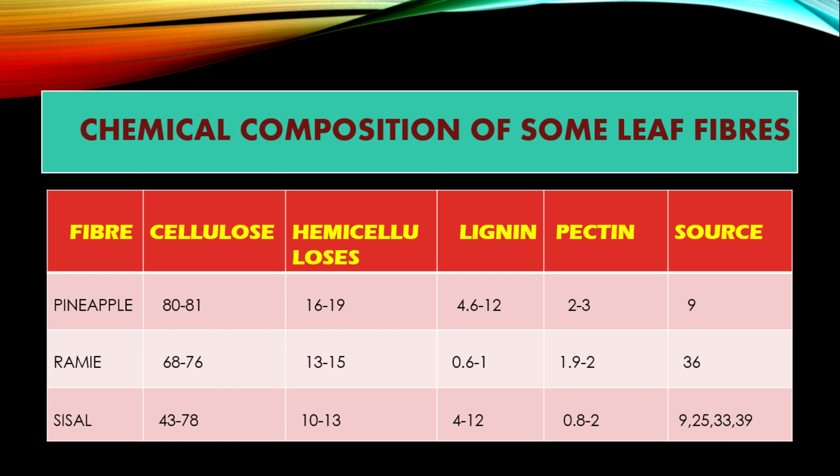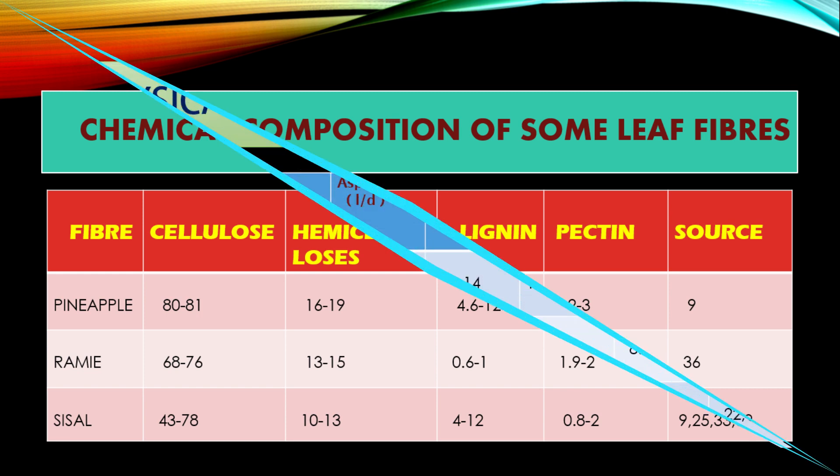Here I am showing a chemical composition comparison of leaf fibers — pineapple fiber, ramie fiber, and sisal fiber. The comparison includes cellulose, hemicellulose, lignin, pectin, and their sources. For pineapple fiber the chemical composition ratios for these six components are shown here.